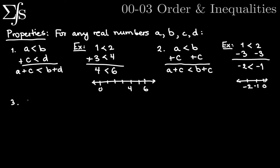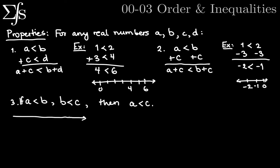The third property is transitivity. If A is less than B and B is less than C, then A is less than C. Visually, if we have A to the left of B and B to the left of C, then A has to be to the left of C — that's just how our geometry works.